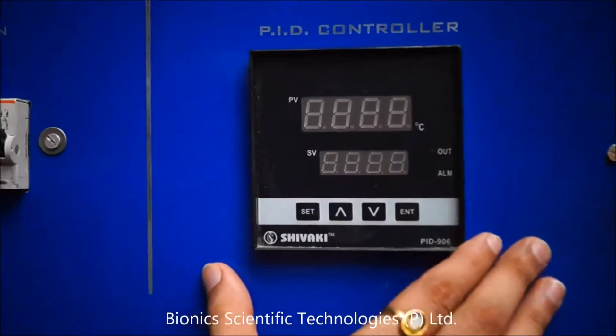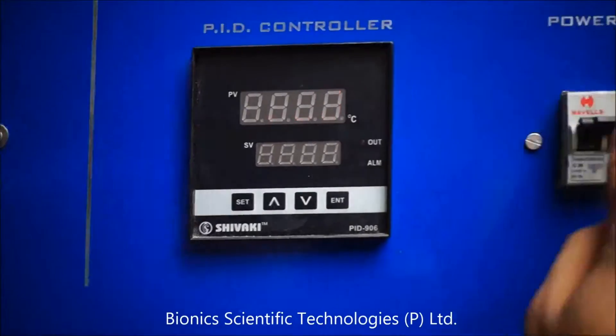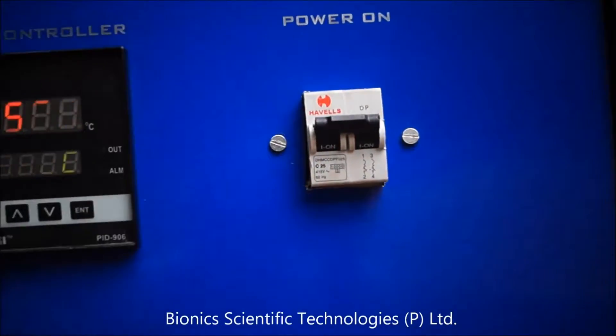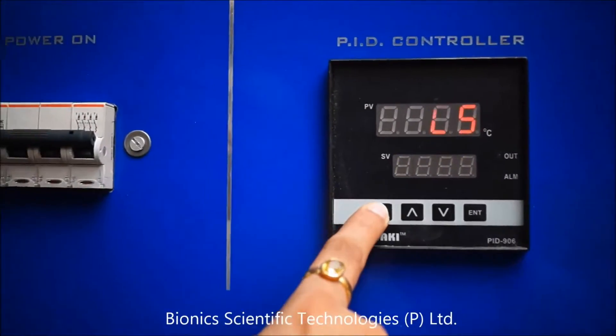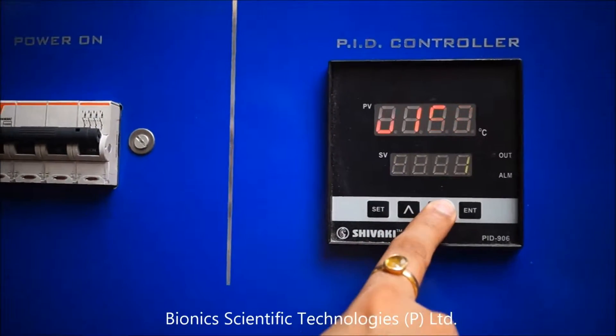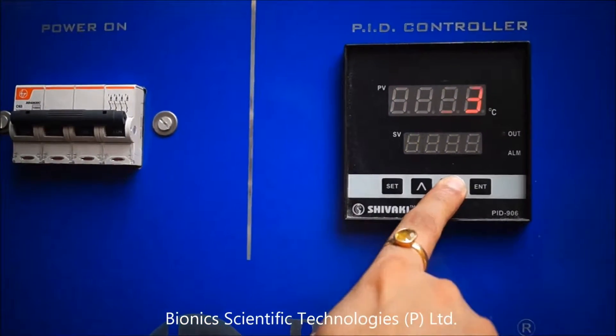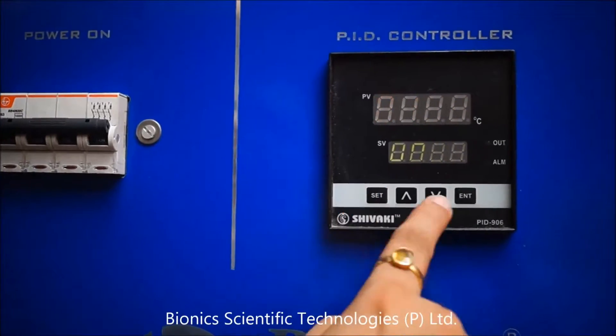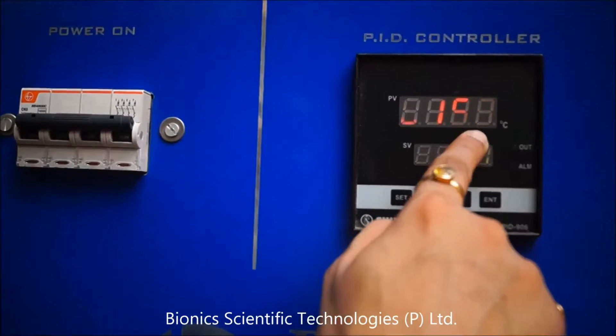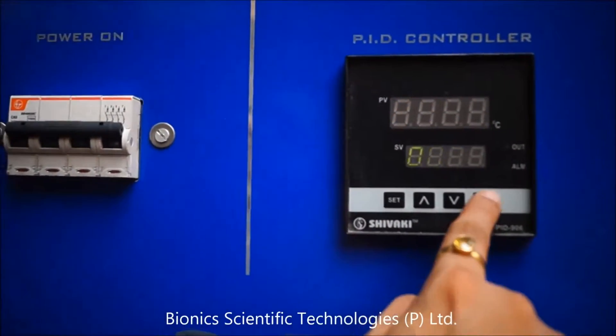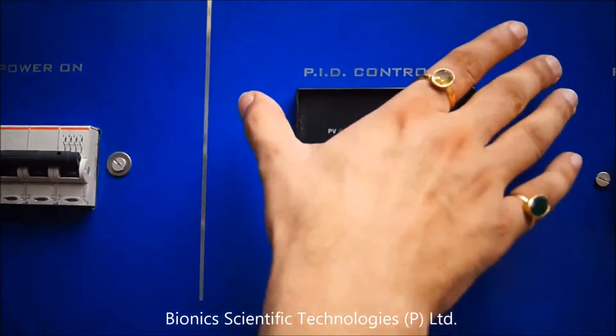Same like for secondary chamber. Press set button. The temperature of secondary chamber is set approximately between 600 degree celsius to 700 degree celsius. When you see desired temperature press enter.